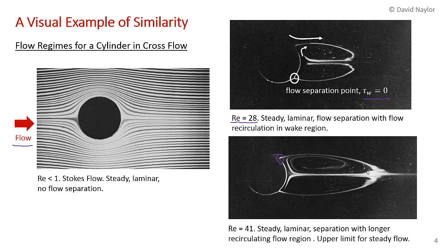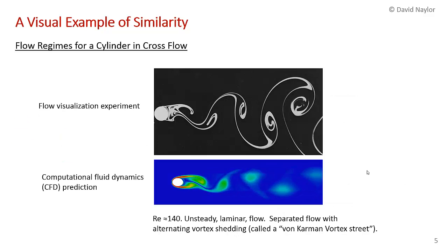Somewhere around a Reynolds number of 60 you start to get alternating vortex shedding. I've shown this picture in previous presentations—this is flow visualization of a cylinder in cross flow at a Reynolds number of about 140. The top picture is a flow visualization experiment, and the lower picture is a CFD prediction of that vortex shedding, where the colors represent fluid velocity.